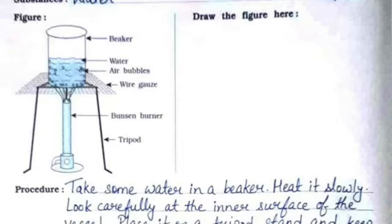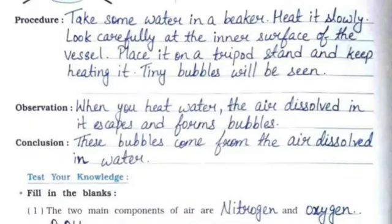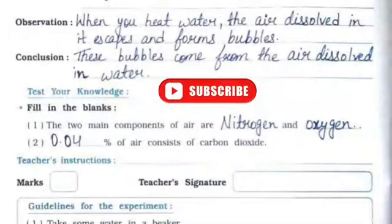You need to draw the same figure on the right hand side. The procedure is: take some water in a beaker, place it on a tripod stand, and heat it slowly. Look carefully at the inner surface of the vessel and keep heating it — tiny bubbles will be seen.